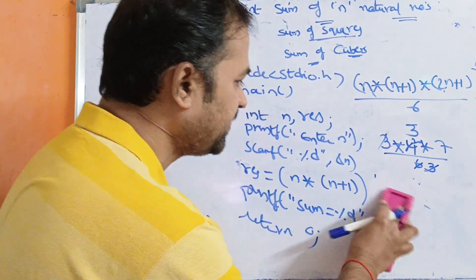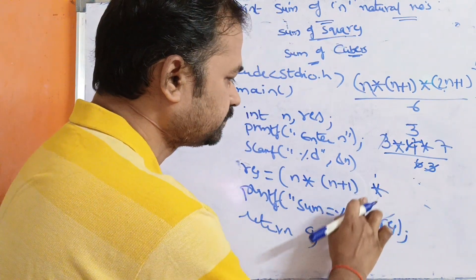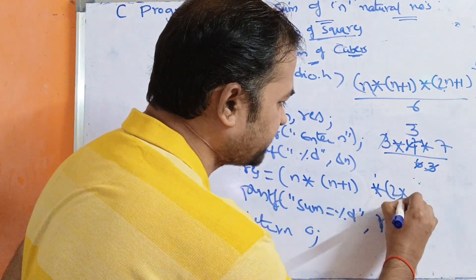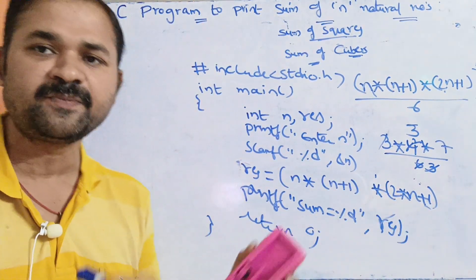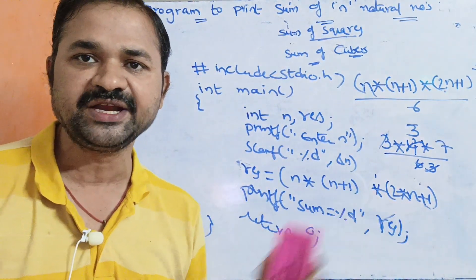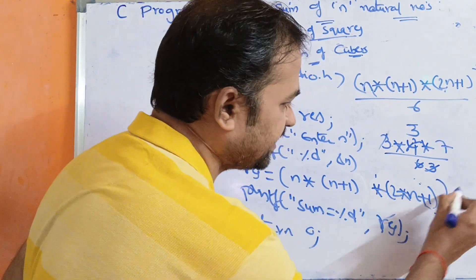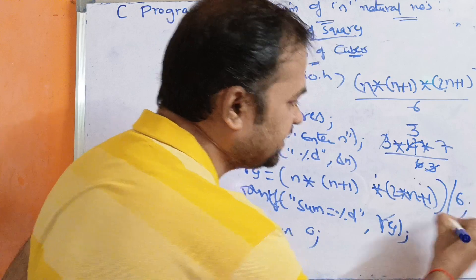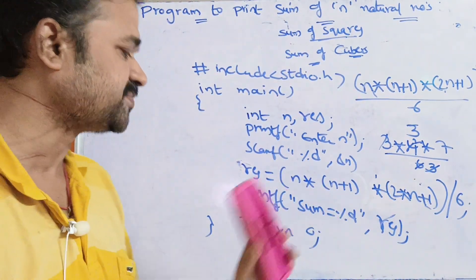n into (n+1) is one expression, into (2n+1). 2 into n plus 1 - between 2n we perform multiplication. So n into (n+1) into (2n+1) is the numerator. Divided by 6 is the denominator. 6 is the denominator. Next we display the sum.